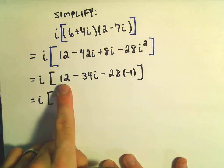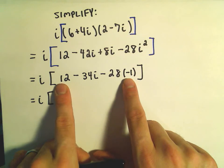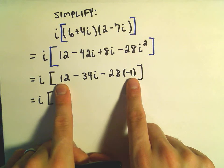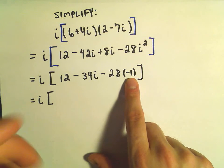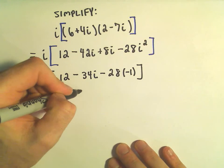So really on the inside, we have 12. We have a negative 28 times a negative 1, so that's really 12 plus 28. 12 plus 28 is going to give us a positive 40 minus 34i.